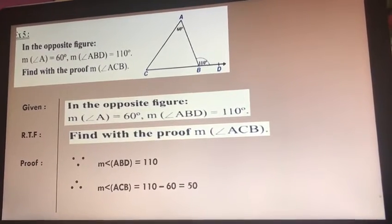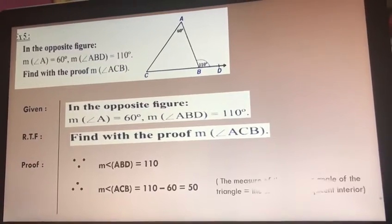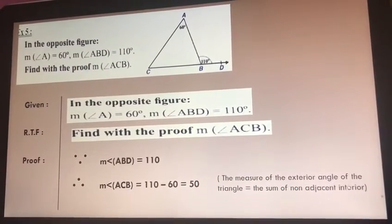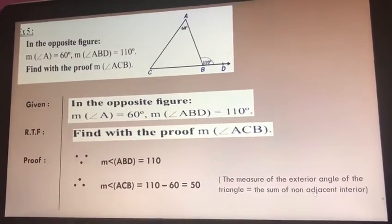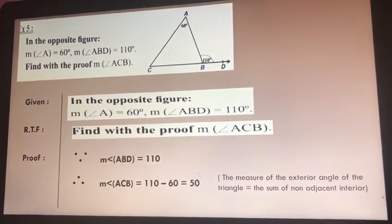Why did I use this note? Because I have to write between brackets: because the measure of the exterior angle is equal to the sum of non-adjacent interior. And that's all, and this is my proof.